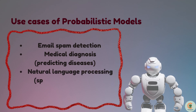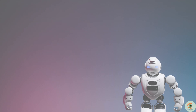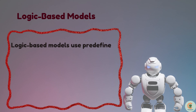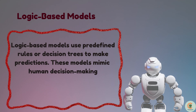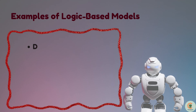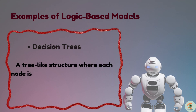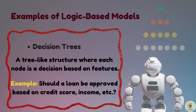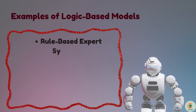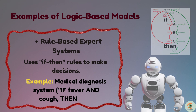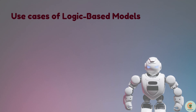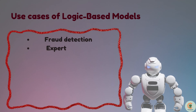Finally, logic-based models use predefined rules or decision trees to make predictions. These models mimic human decision making. Examples include: decision trees — a tree-like structure where each node is a decision based on features (e.g., should a loan be approved based on credit score, income, etc.); and rule-based expert systems — using if-then rules to make predictions (e.g., a medical diagnosis system: if fever and cold, then flu). Use cases: fraud detection, expert systems for medical diagnosis, and legal AI.